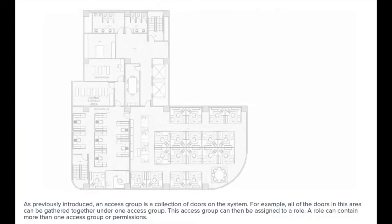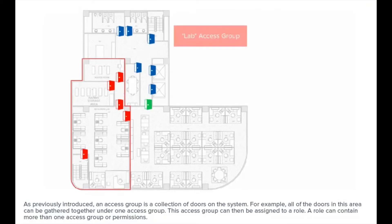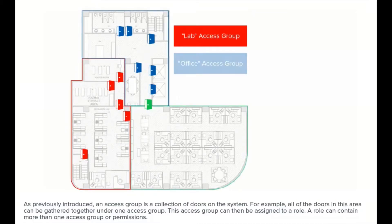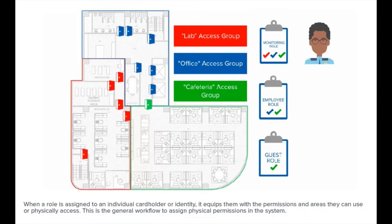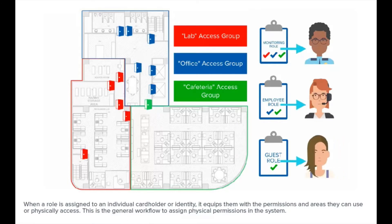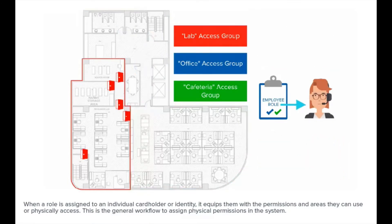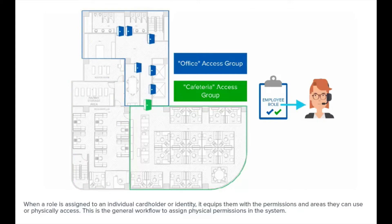As previously introduced, an access group is a collection of doors on the system. For example, all the doors in a given area can be gathered together into one access group. This access group can then be assigned to a role. A role can contain more than one access group or permissions. When a role is assigned to an individual cardholder or identity, it provides them the permissions and areas they can use or physically access. This is the general workflow to assign physical permissions in the system.